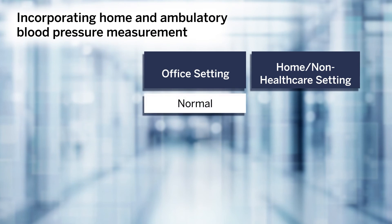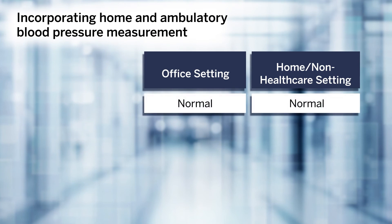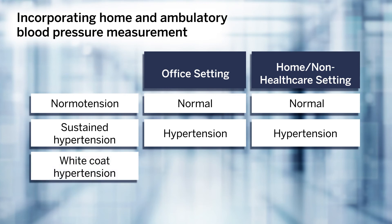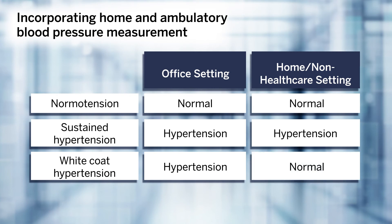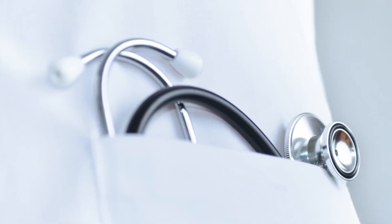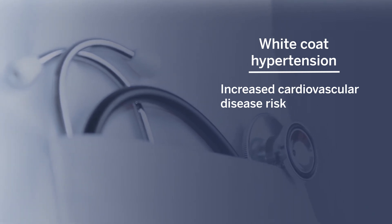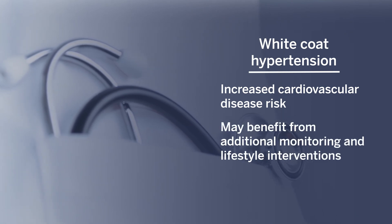So how do we put all these numbers together? If a patient has normal blood pressures both in the office and in the out-of-office setting, they are called normotensive. If a patient has hypertension both in the office setting and in the non-healthcare setting, they have what we call sustained hypertension. But what if there's discordance? White coat hypertension refers to the situation where a patient has elevated blood pressures in the office but normal blood pressures on out-of-office measurement. A recent meta-analysis suggested that untreated white coat hypertension is associated with excess cardiovascular disease risk compared to patients with true normotension.